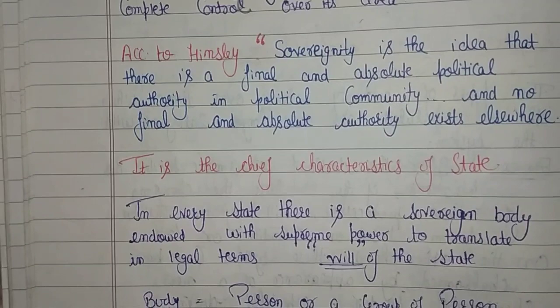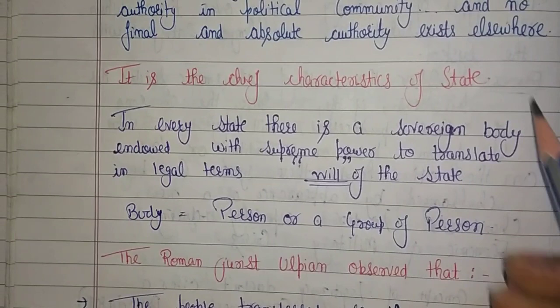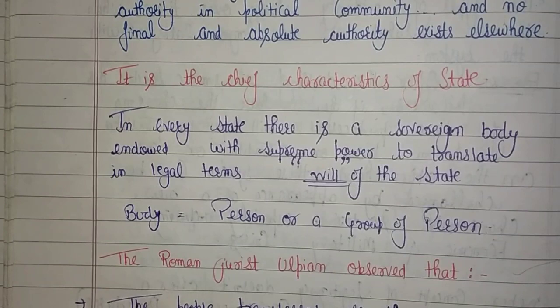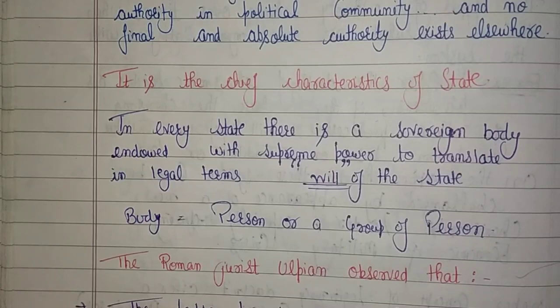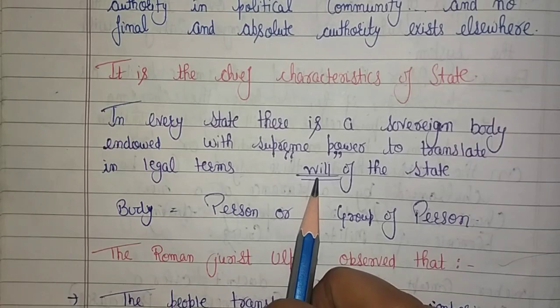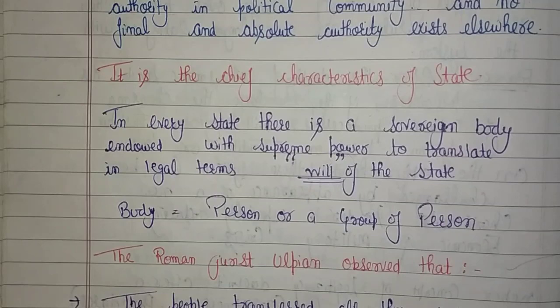And no final and absolute authority exists elsewhere — कहीं और कोई final और absolute authority exist नहीं करती। उस person या पूरे group के पास ही सारी power होगी। किसी भी state के लिए ये chief characteristic में आता है — जैसे India के Preamble में sovereign, socialist, secular, democratic republic mention है। In every state there is a sovereign body endured with supreme power to translate the will of the state into legal terms।